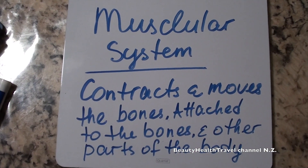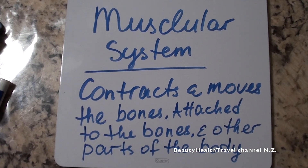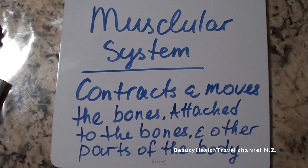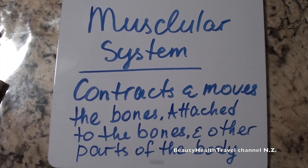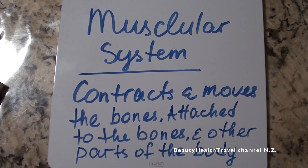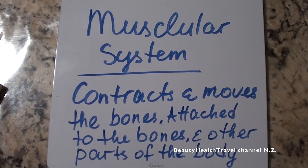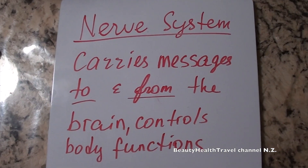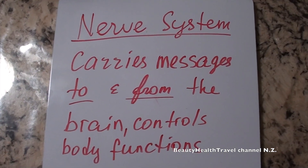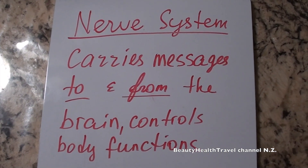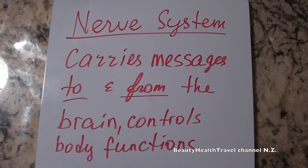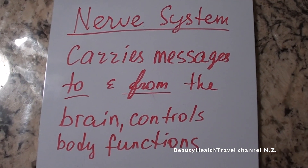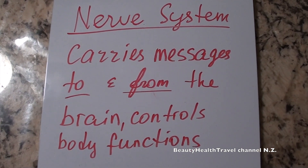Muscular tissue contracts and moves the bones, and attaches to the bones and other parts of the body. Nerve tissue carries messages to and from the brain and controls the body functions.